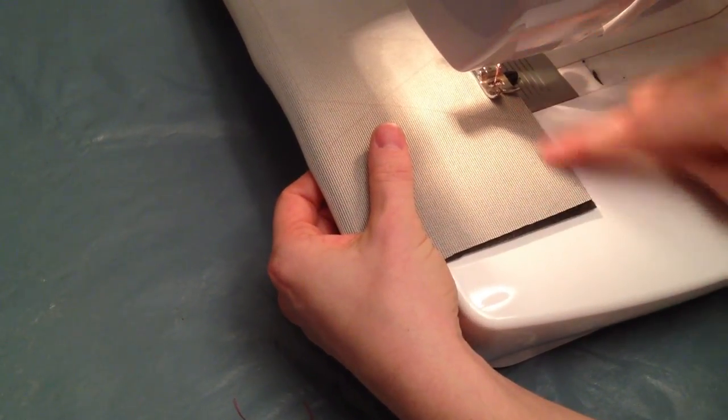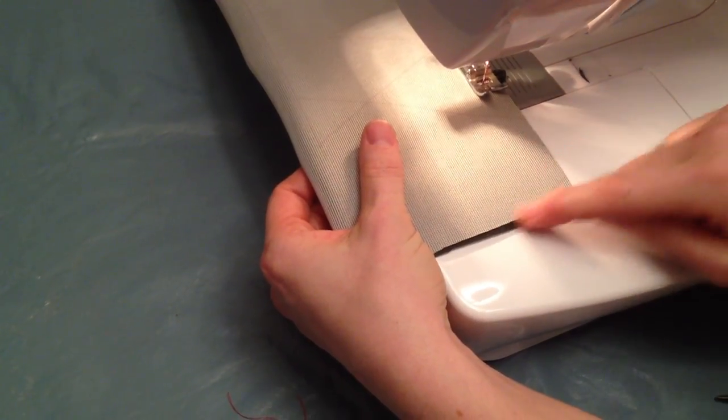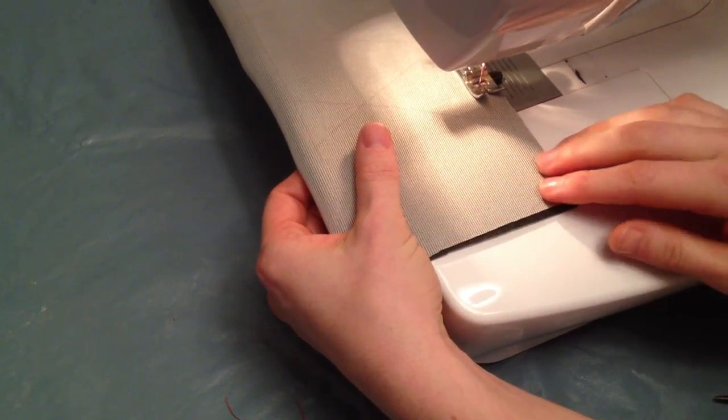So when we get down to the corner, you can either make it a straight 90 degree or you could curve it. I tend to just curve it because I can sew it faster that way.